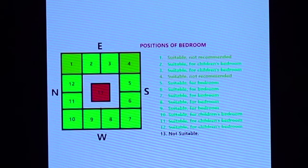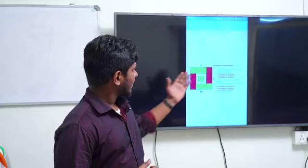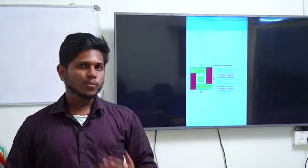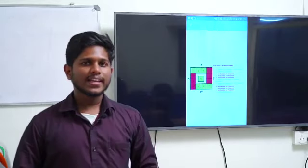Here we have the positions of pooja room. The 1, 2, 3, 7, 8, 9, and 13 are the best positions for pooja room, and the red ones are the not suitable areas of pooja room.